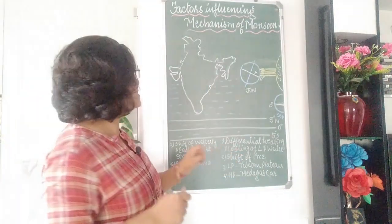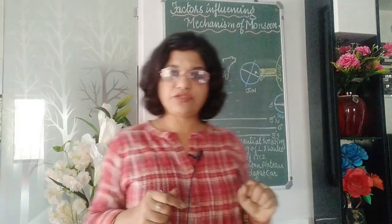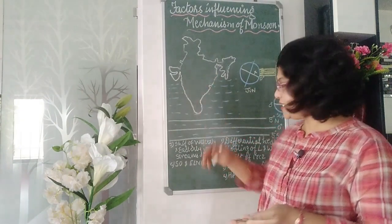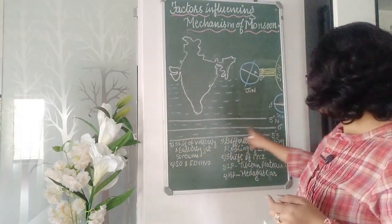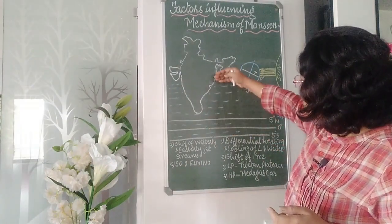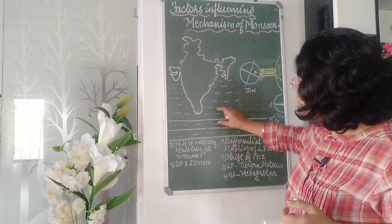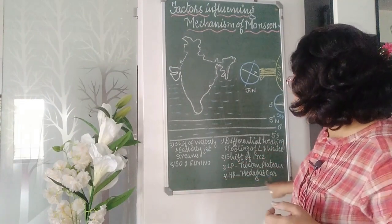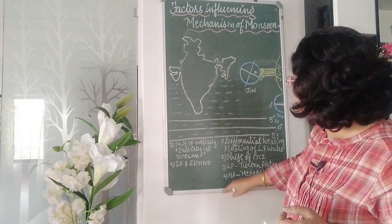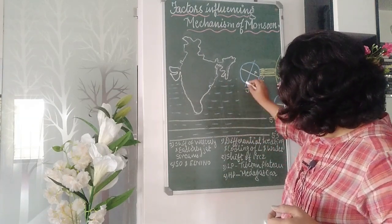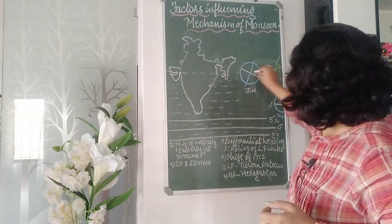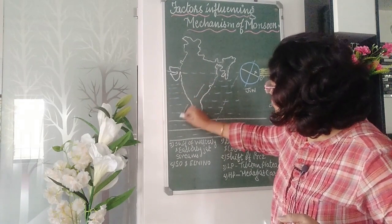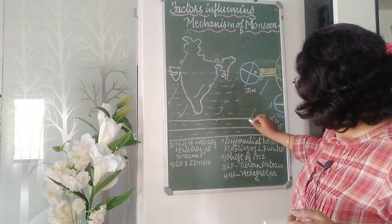The second factor is the shift of ITCZ — the Intertropical Convergence Zone. This term is introduced in your syllabus for the first time. 'Inter' means from both sides. The zero degree equator is in the centre, with areas above and below. From both hemispheres, the tropical areas between 23 degrees north and 23 degrees south — the winds converge in this zone, coming from the colder areas towards the hot equatorial belt.